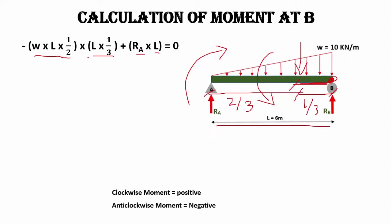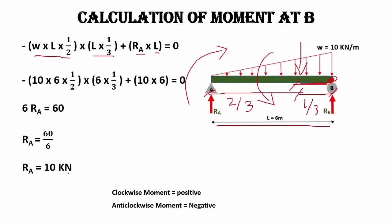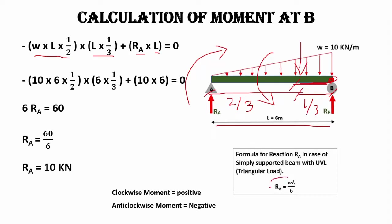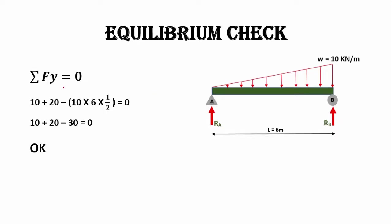After substituting the values, we get the support reaction RA equal to 10 kilonewtons. We can also use the formula RA = wL/6. For the equilibrium check we use ΣFy = 0: upward forces are positive and downward forces are negative. RA = 10 kN and RB = 20 kN act upward, the total triangular load of 30 kN acts downward, so the sum is zero — the check is correct.